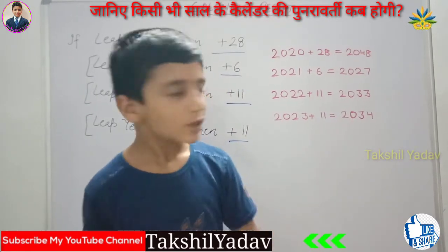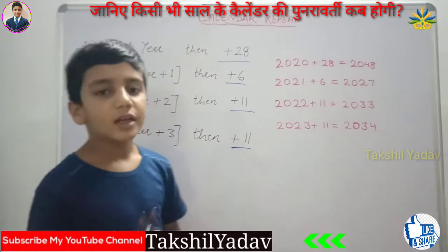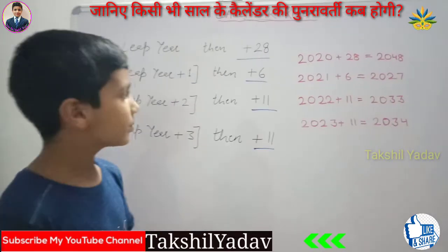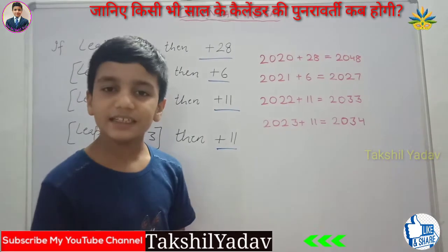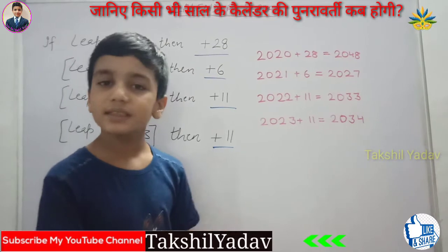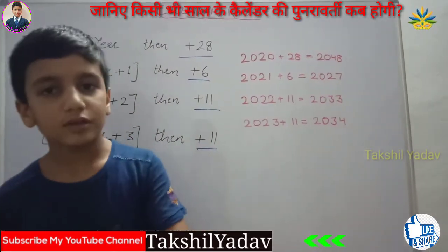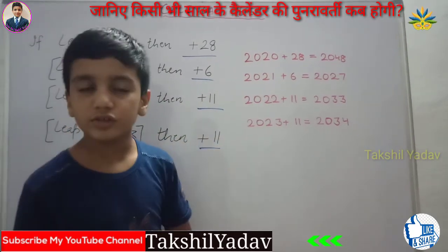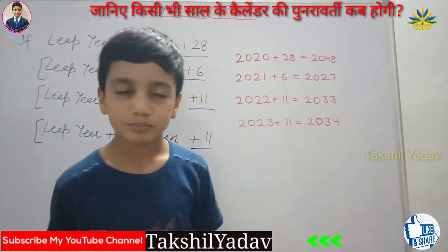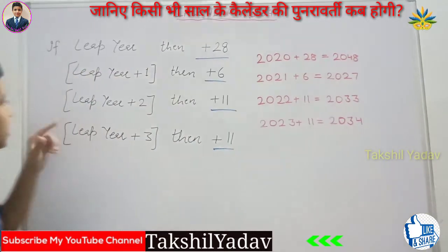Now for the leap year plus 1 case: the year after a leap year. If we add 6 to that year, the resulting year's calendar will match. For example, 2021 is leap year plus 1 (2020 plus 1). We add 6 to get 2027. So 2027's calendar will match with 2021's calendar.